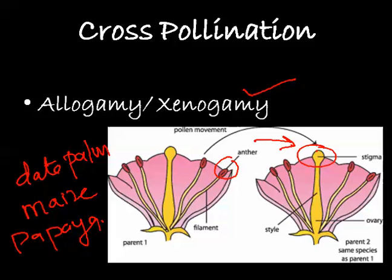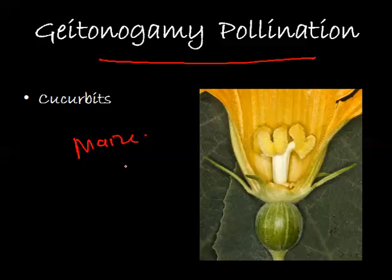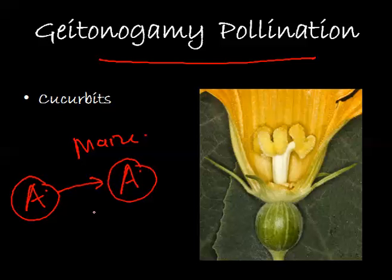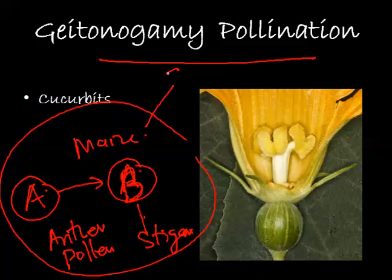The third type is geitonogamy. This type of pollination is normally found in the Cucurbitaceae family and in maize. In this situation, the pollen from one flower falls on the stigma of another flower of the same plant. For example, pollen from flower A will fall on flower B's stigma, but both flowers belong to the same single plant.